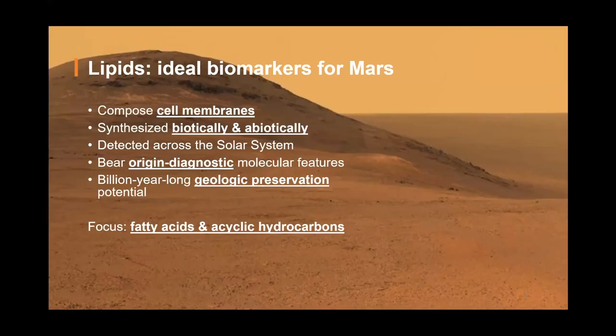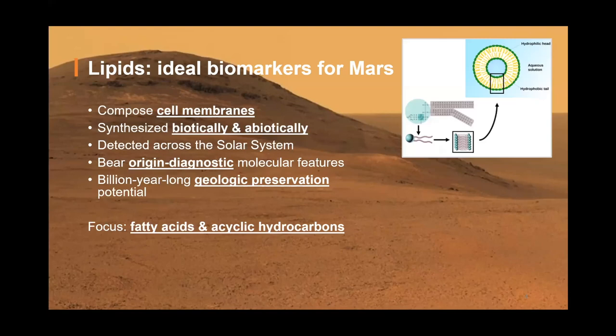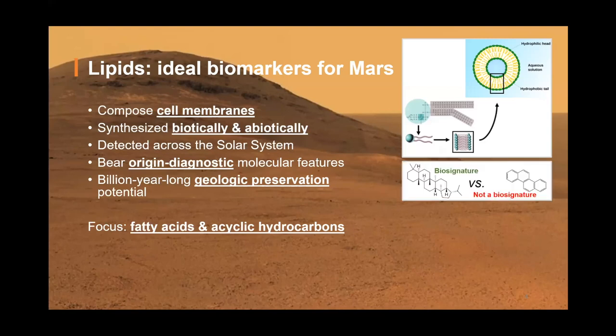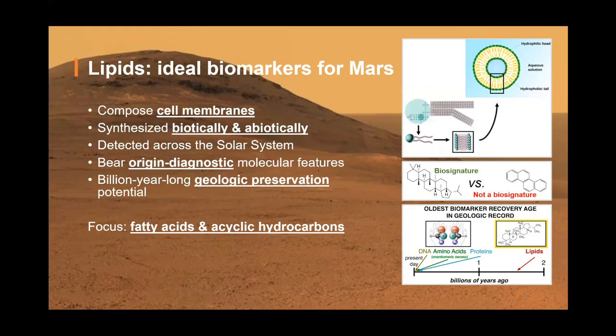There are many different types of organics you can use to search for life on other planets, but I'm focusing on lipids because they're ideal biomarkers for Mars in particular. Lipids make up the cell membranes that are universal to life as we know it. They are formed both biotically and abiotically and have been detected in meteorites and on Mars. But because biotic and abiotic synthesis mechanisms differ, there are differences in structures that could be termed origin diagnostic, because they can help us figure out whether those molecules came from life or not. Certain types of lipids also have up to billion-year-long geologic preservation potential, meaning that they can provide evidence for ancient life up to billions of years after those organisms might have died. So it's ideal for looking for ancient life on Mars.